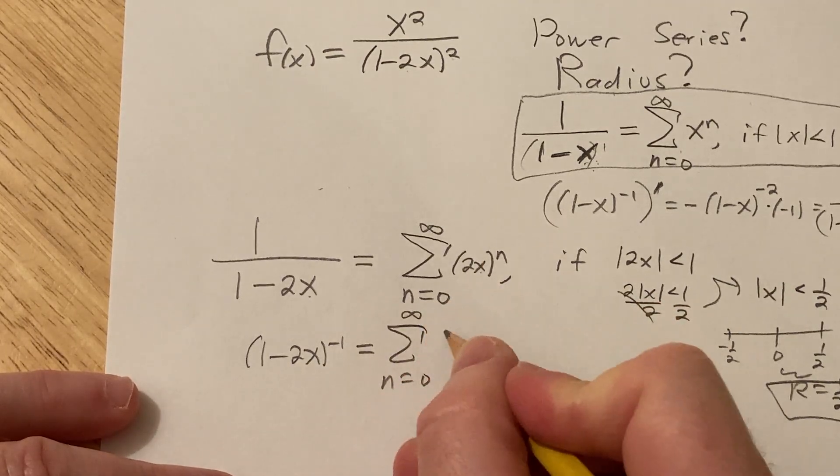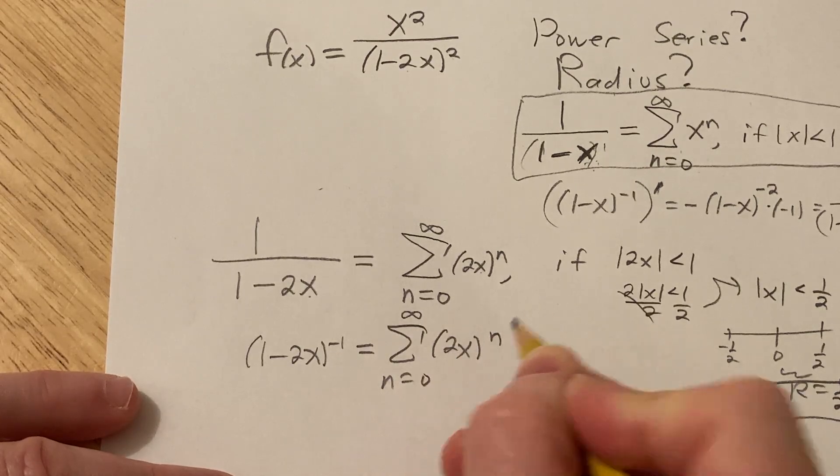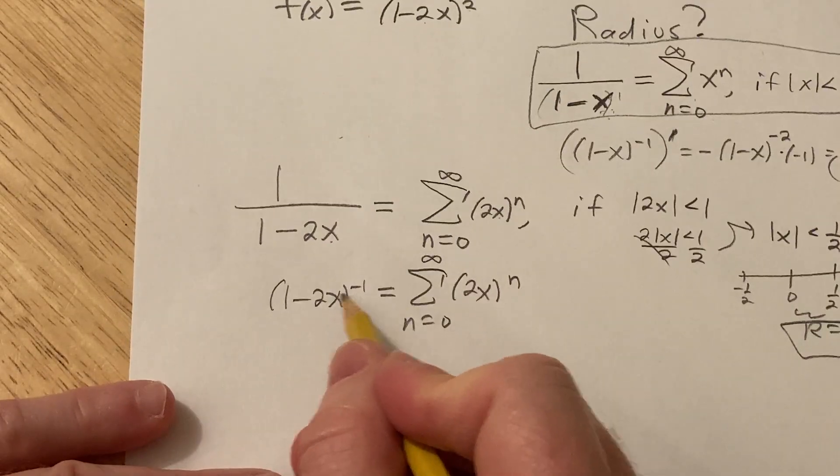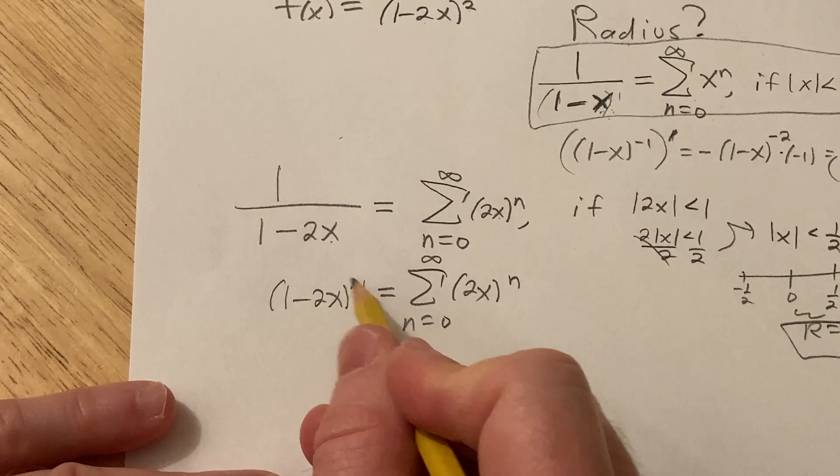n equals 0 to infinity, 2x to the n. All right, so differentiating this, both sides, differentiating this side, you bring down the negative 1.